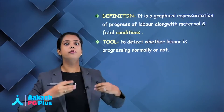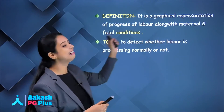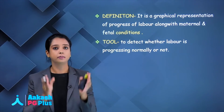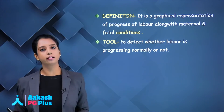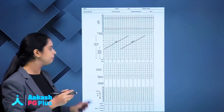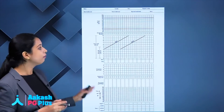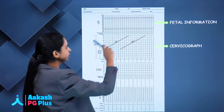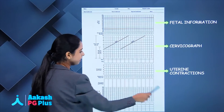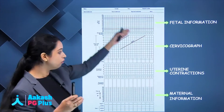Now we will read about the partogram — how will you know whether labour is prolonged or not? You have to plot it on the partogram. What is a partogram? It is a graphical representation of the progress of labour along with maternal and fetal conditions. It is a tool to diagnose whether labour is progressing well. The partogram has 4 parts: fetal information, cervicograph, uterine contractions, and maternal information.